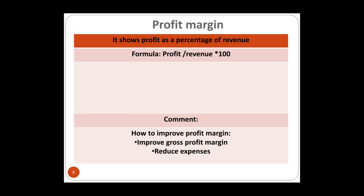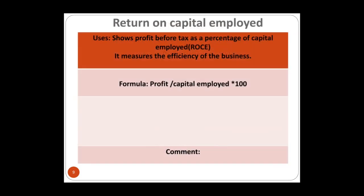If the business has good control over its expenses and improves its gross profit, then the business will be able to increase its profit margin. The third ratio, which is important to shareholders, is return on capital employed (ROCE).